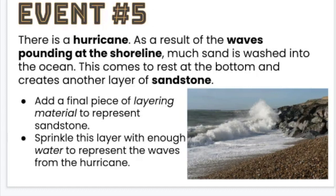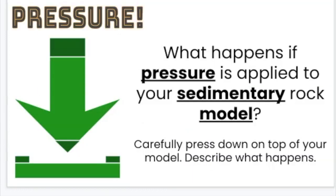Event number five. There is a hurricane, and as a result of the waves pounding at the shoreline, much sand is washed into the ocean. This comes to rest at the bottom and creates another layer of sandstone. Add a final piece of layering material to represent this layer of sandstone, and sprinkle it with enough water to represent the waves from the hurricane — use a spoon to get it pretty wet and saturated. Next, carefully apply pressure to your model by pressing down on top.